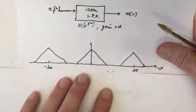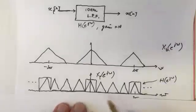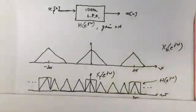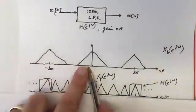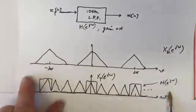So adding the zeros in will compress in the frequency domain. So this is spread out here. When we add those zeros in, it compresses.